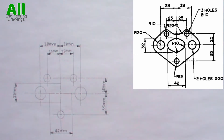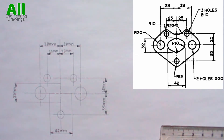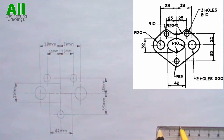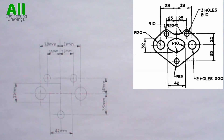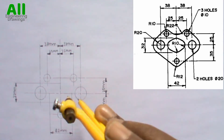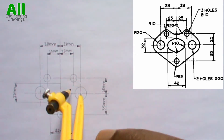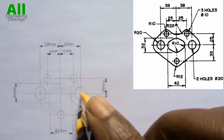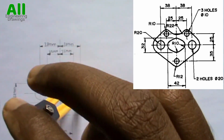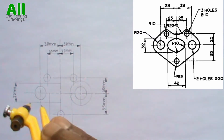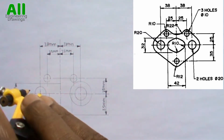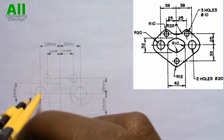Next, adjust your compass to a radius of 20mm. Then place your compass on this point and draw a circle. Also place your compass on this point and draw another circle.